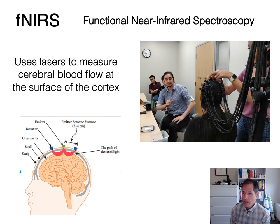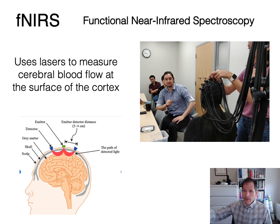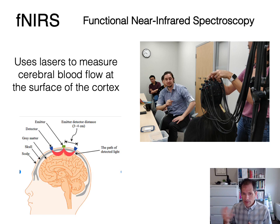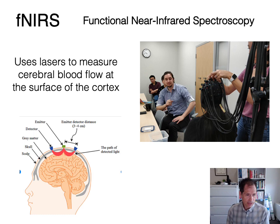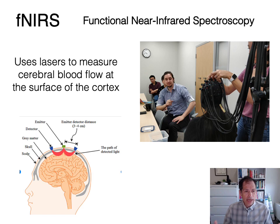The upsides to fNIRS relative to fMRI: it doesn't make any noise, and it can be fairly mobile. You can get fNIRS systems connected to a mobile computer, so people can move around — on a treadmill or walking from place to place. You can have people listen to stimuli or respond to a computer screen while just wearing something on their head. The downside is that it only detects things at the surface of the cortex. Unlike fMRI, which can penetrate deeply to look at subcortical structures like the hippocampus, fNIRS can only detect things on the surface of the cortex.